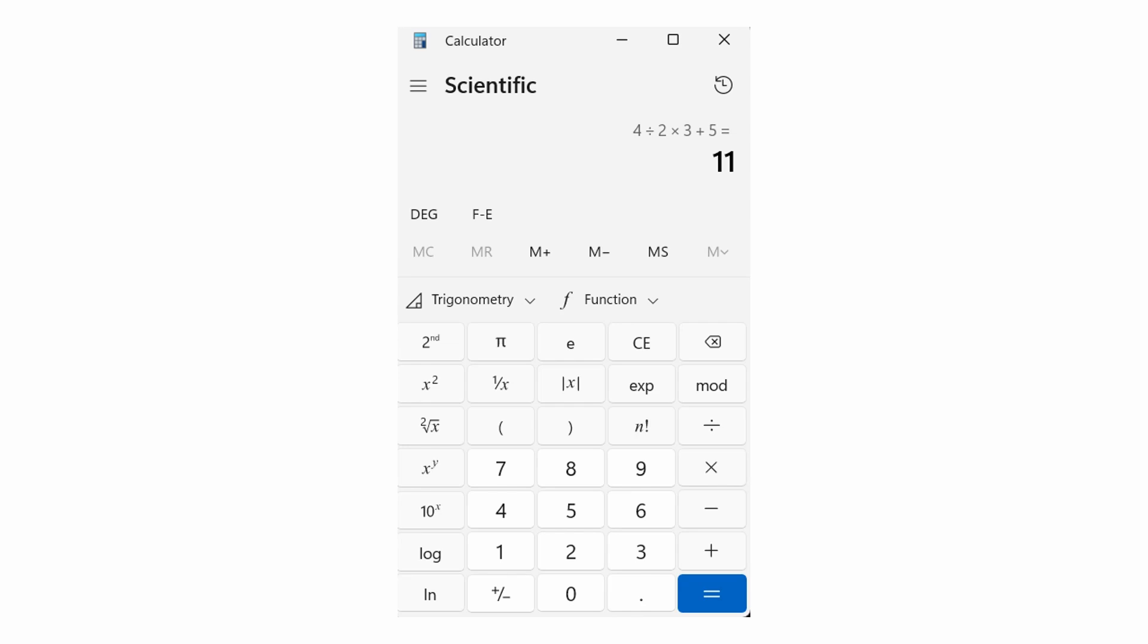You can verify some of these answers if you have a scientific calculator. A cell phone calculator works great, it's programmed for order of operations. If you're using a computer as I did here, you want to use the scientific mode on the calculator, which is what I did here, and you can see you can double check your answer to be 11.